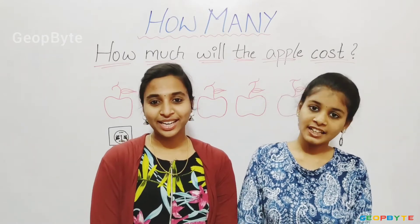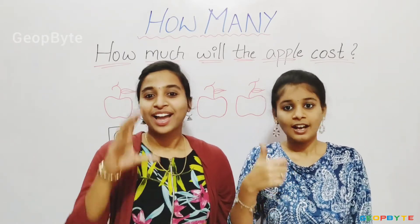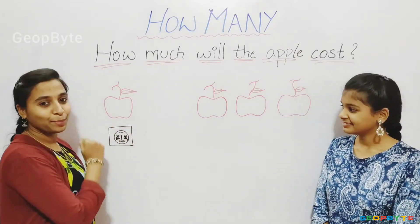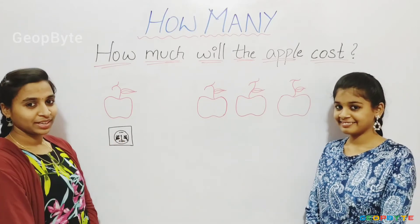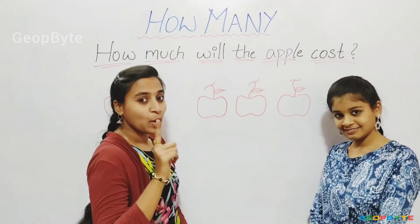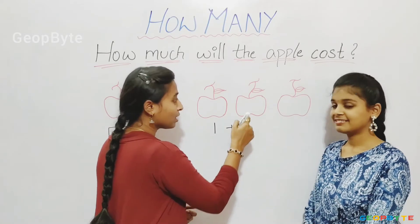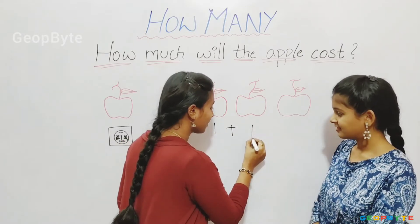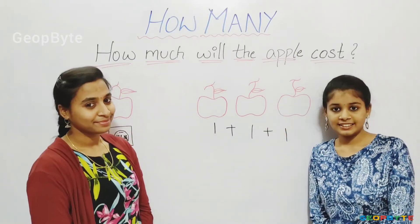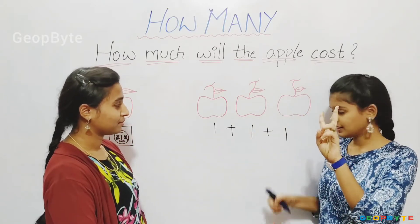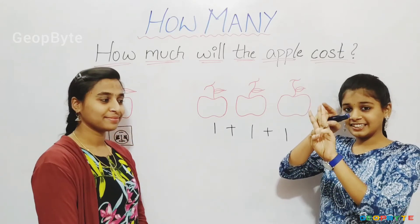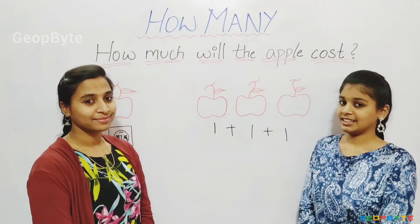Now let us get into the topic — how much will the apple cost? Hey kids, see here. We have an apple. This apple costs one rupee. Now let us see how much these three apples cost. One apple is one rupee, plus one apple is one rupee, plus one apple is one rupee. Now let us add them. One plus one plus one. One, two, three. The total cost of these three apples is three rupees.